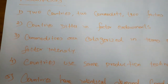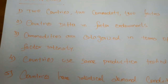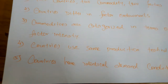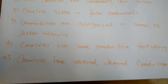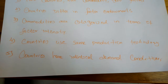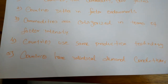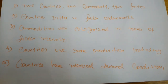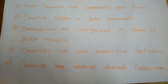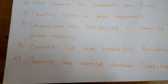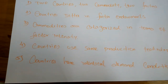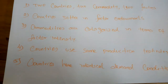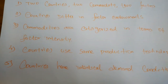Next, the two countries use the same production technology — there is no difference in technology; both nations use the same technology to produce any commodities. Next, countries have identical demand conditions, meaning both nations also have the same demand for commodities. Next, there is perfect competition in both product and factor markets in both countries — supply and demand of commodities are present, there are no government interventions, and both buyers and sellers participate freely.